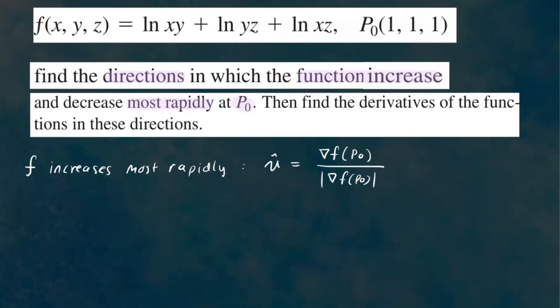We'll start off by finding the gradient of f. The gradient of f is going to be its partial derivatives with respect to each variable: f sub x, f sub y, and f sub z. These are our partial derivatives, and together they form the gradient vector by definition.